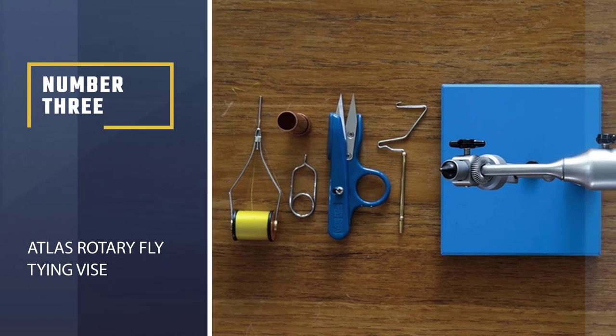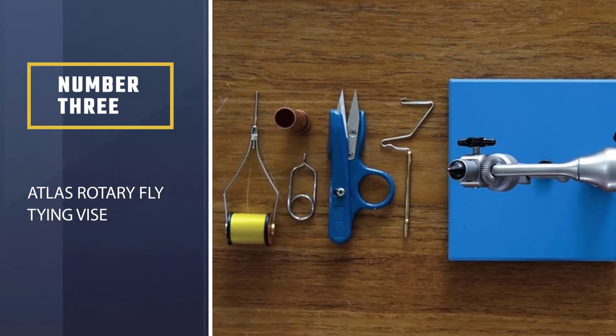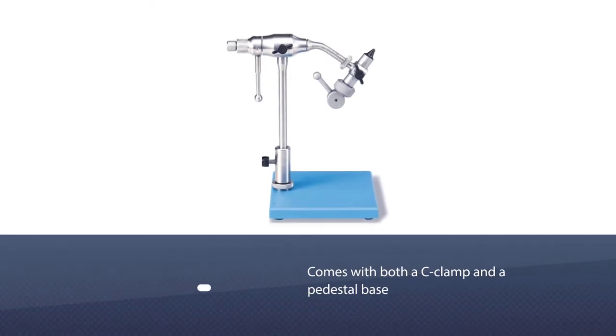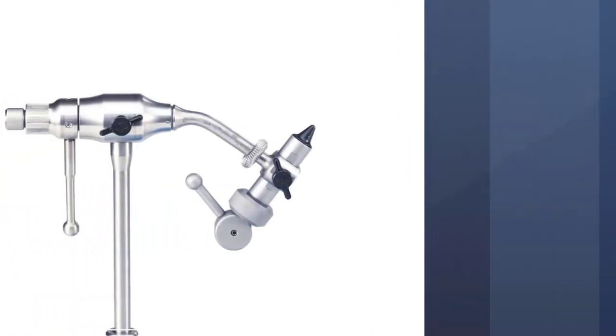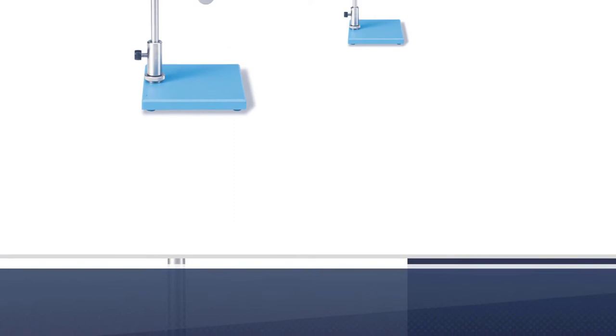Number 3, Atlas Rotary Fly Tying Vise. The Atlas comes with both a C-clamp and a pedestal base. The pedestal base in particular is incredibly sturdy. The C-clamp also holds the vise very well, so it's a matter of personal preference as to which to use.